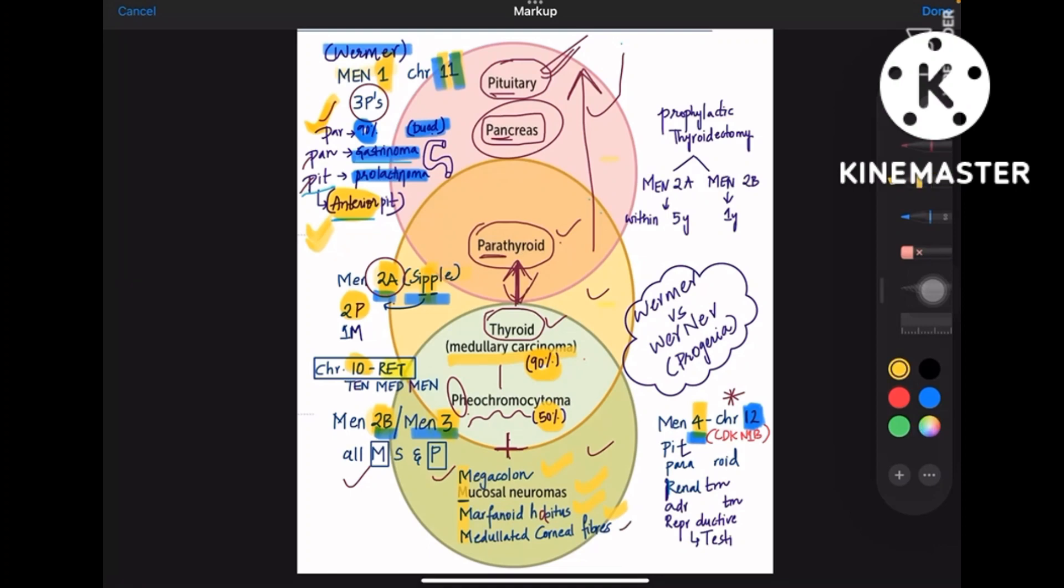Now let us discuss about MEN4 which is on chromosome 12 and the organs that are involved are pituitary, parathyroid, and the genitourinary like renal, adrenal, and reproductive tissue like testis. Testicular tumors and adrenal tumors are involved and parathyroid is involved in MEN4.